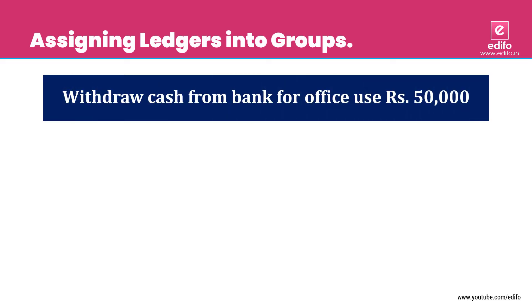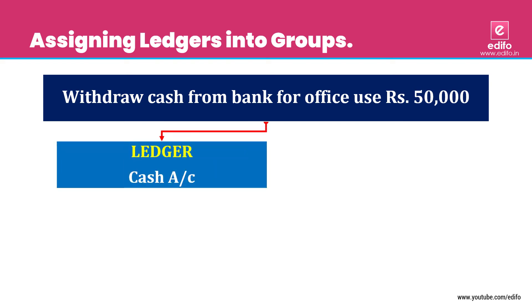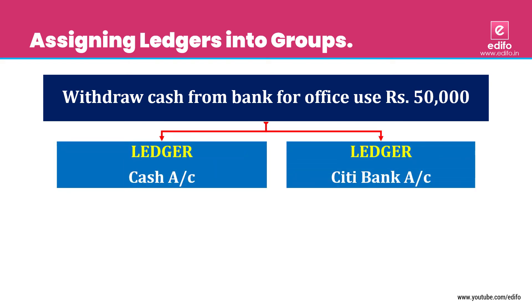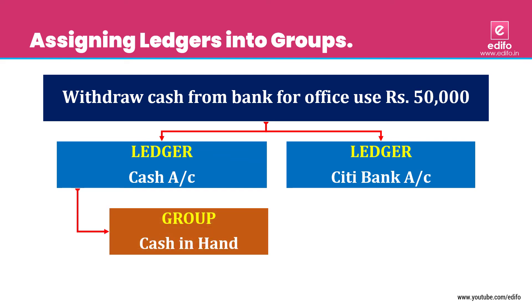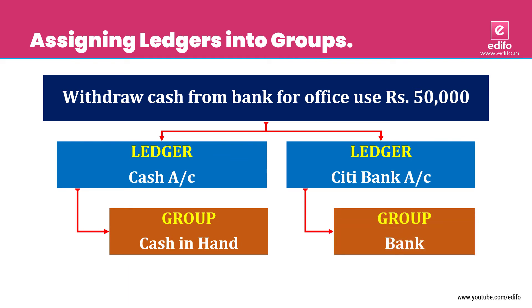Next transaction: withdraw cash from bank for office use. Any amount withdrawn from the bank for office use is treated as a cash withdrawal. Two aspects: cash account will increase and bank account will decrease. Cash belongs to 'Cash in Hand' and Citibank belongs to 'Bank' group.